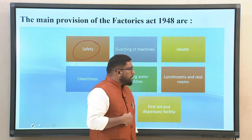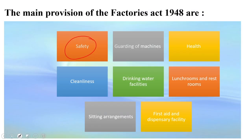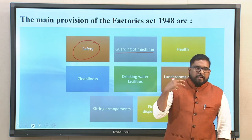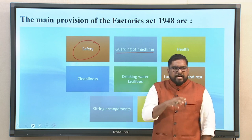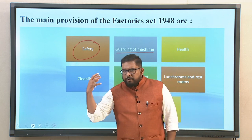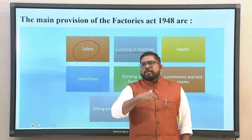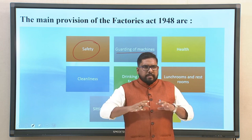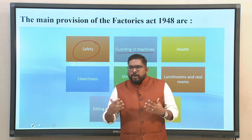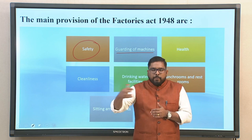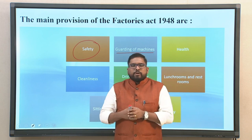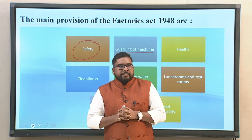Guarding of machines is another important aspect. When you look into the provisions of the Factories Act 1948, there may be a sharp cutting machine, a CNC machine, or a lathe machine. All these machines and tools in production would have certain guarding or a certain level of protection, whereby the employees, co-workers, and operators need not be at a position of threat every single time. So there should be a guarding of these machines.